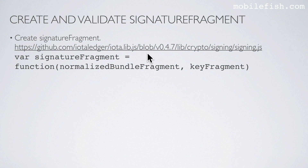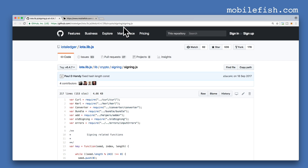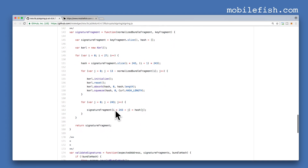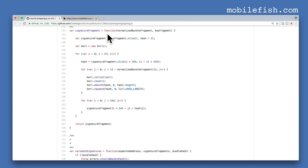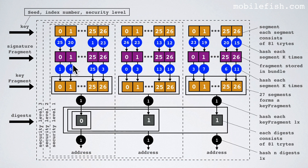To create a signature fragment, go to this link and search for the function signature fragment. This is the signature fragment function, and this is the calculation shown before: 13 minus the decimal value. Depending on the selected security level you will have 1, 2 or 3 signature fragments. A transaction object stores a signature fragment in the signature message fragment field. This field size is 2187 trits and additional transaction objects are needed to store the remaining signature fragments.